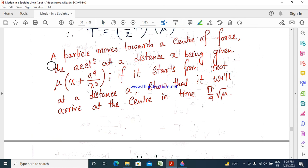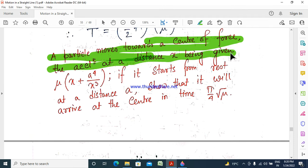A valid problem: A particle moves towards a center of force, the acceleration at a distance x being mu into x plus a to the power 4 by x cubed. If it starts from rest at a distance a, show that it will arrive at the center in time pi by 4 root mu.